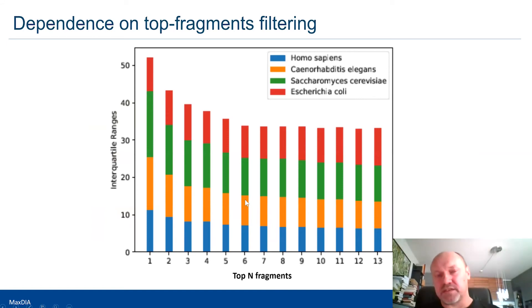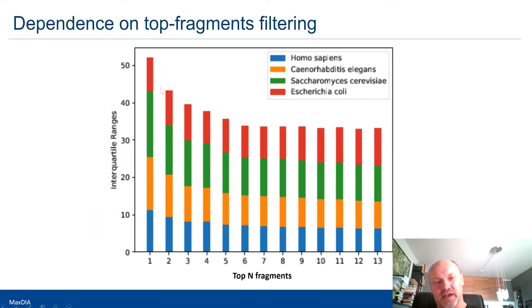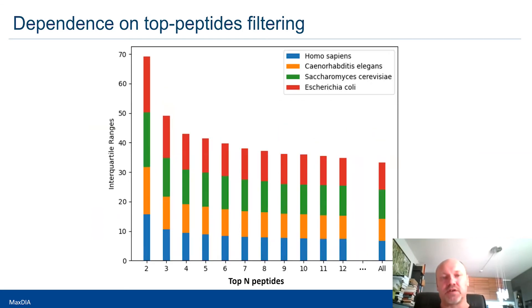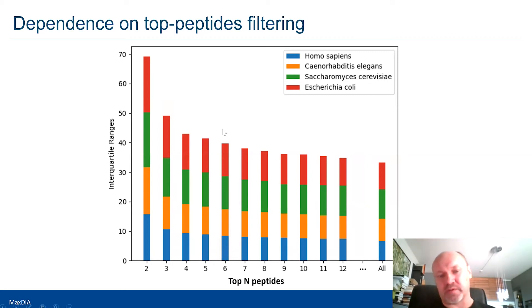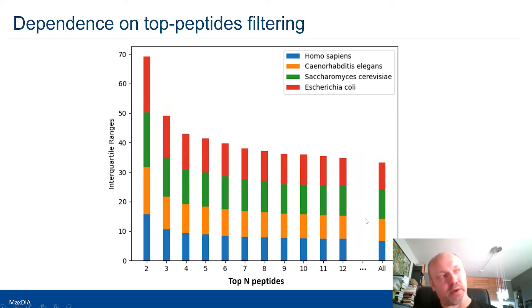We investigated the optimal number of fragments for quantification by scanning through top-N fragments. The result plateaus around seven to eight fragments — you shouldn't take too few, but taking more doesn't hurt, so you could set it to infinity. For the number of top peptides used for quantification, the answer is to take all of them — there is no reason to use fewer than all peptides when using this MaxLFQ-based quantification approach.